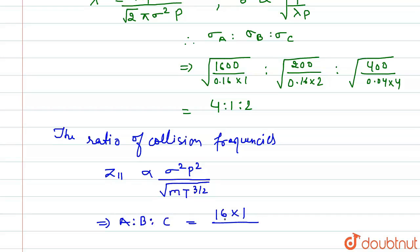So now from this relation, this will be equal to 16 × 1 divided by √(20) × 1600 to the power 3/2. The ratio again we can write as 1 × 4 divided by √40 into 200 to the power 3/2.